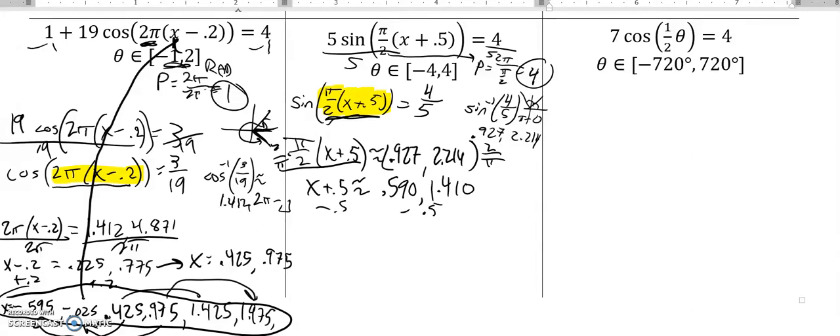Subtract 0.5 from everything. So x is about 0.090, 1.410 would be 0.910. So there's my primary pieces.